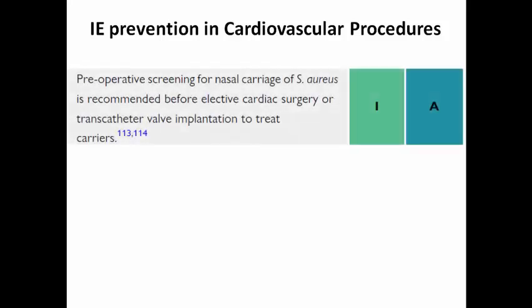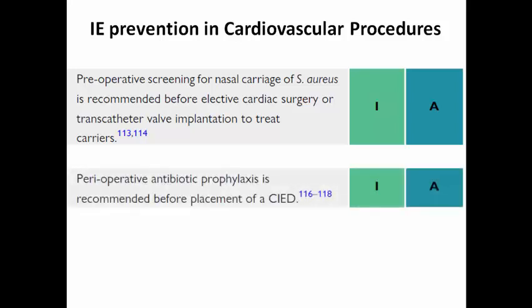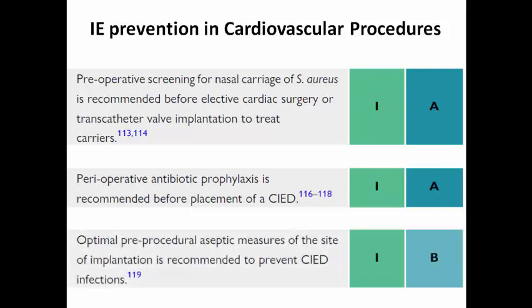There are specific recommendations for prevention of infective endocarditis in cardiovascular procedures themselves. Preoperative screening for nasal carriage of Staphylococcus aureus is a Class I recommendation before any elective cardiac surgery, transcatheter valve implantation, or pacemaker implantation. Preoperative antibiotic prophylaxis is important before placing a cardiac implantable electronic device, and optimal pre-procedure aseptic measures at the implantation site are essential to prevent pocket infections, which can result in cardiac device-related infection with a detrimental prognosis.